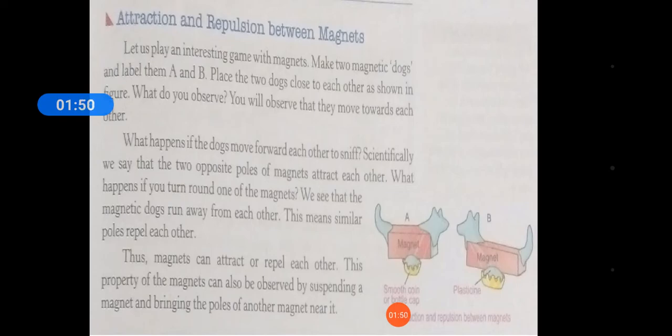Thus magnets can attract or repel each other. The property of the magnet can also be observed by suspending a magnet and bringing the poles of another magnet near it.